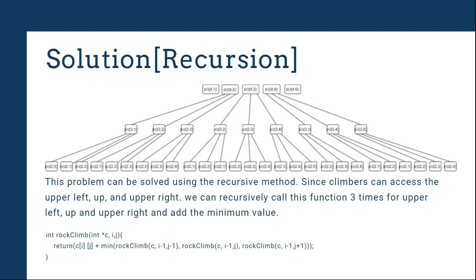We can solve this problem with recursion. Since the rock climber can only go to three points, we can recursively call three functions, find the minimum value, and sum it up to find the solution.